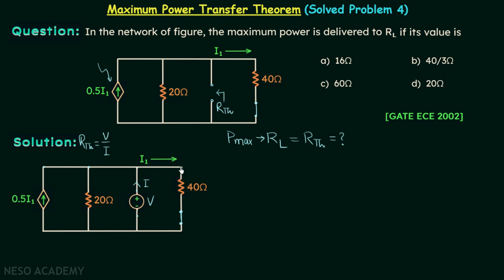These points have the same potential, so this entire line can be considered as a single node. To this node, we have four branches connected: this branch has current i1 leaving the node, this branch has current I entering the node, this branch has current V/20 leaving the node (because it has resistance 20 ohms and voltage V across it), and this branch has current 0.5i1 entering the node. We can apply KCL at this node.